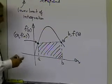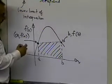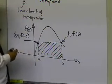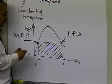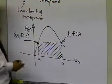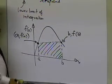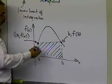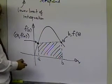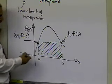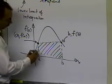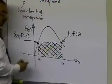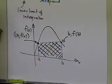So that's the bottom line about numerical integration: you are approximating the original function, which you may or may not be able to integrate exactly, by some other function whose integral you know how to find. So let's go ahead and derive the trapezoidal rule — we have to find the area under the curve going from point a to point b.